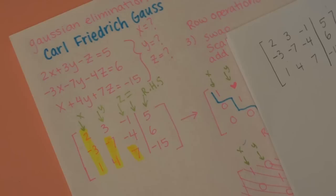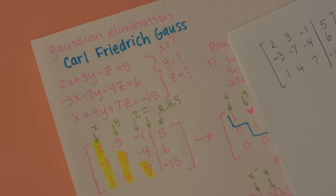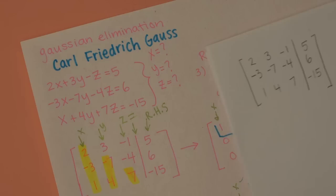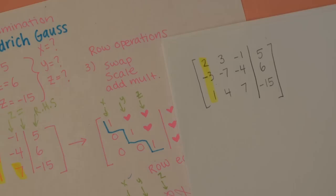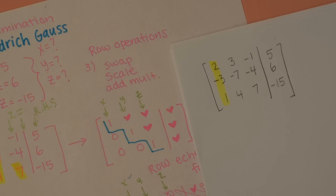Remember, our goal for Gaussian elimination is to go column by column. So we'll start with this first column, and try to get 1, 0, 0 going down. The first thing to do is make this first term a 1.